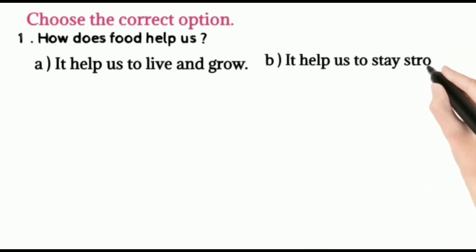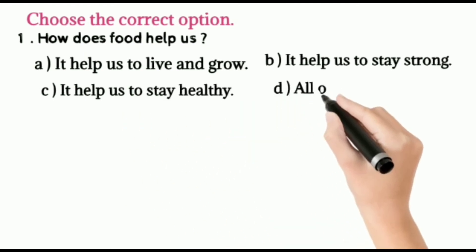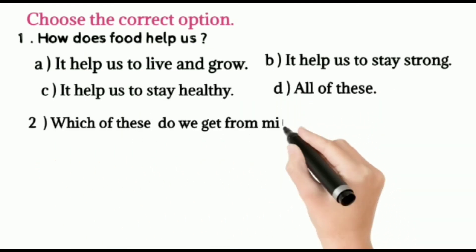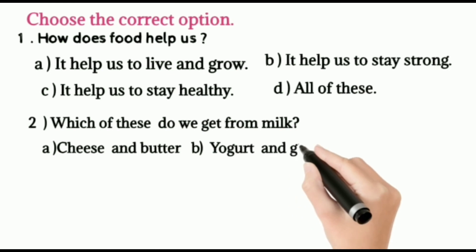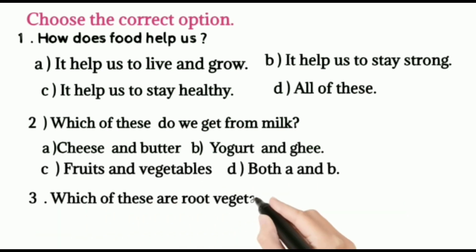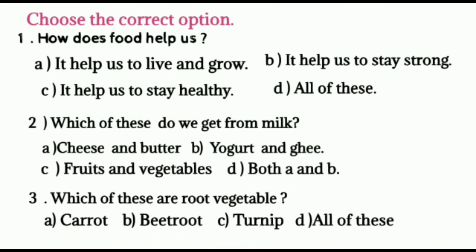One, how does food help us? A. It helps us to live and grow. B. It helps us to stay strong. C. It helps us to stay healthy. All of these are right. So, answer is D. All of these.